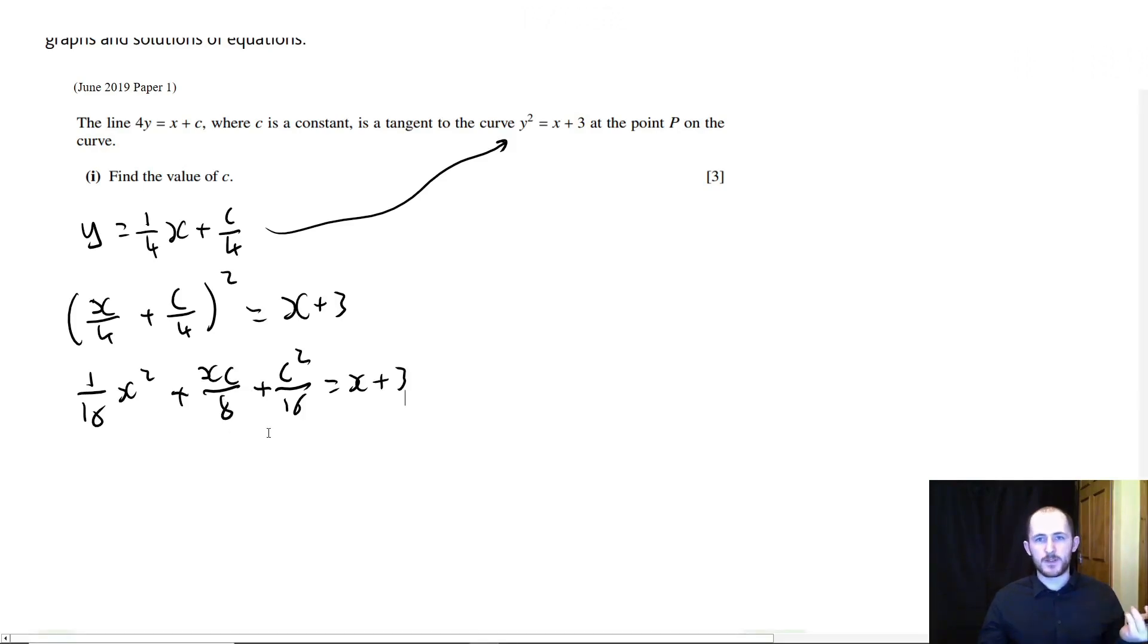Now, what we can do here is we can actually work with this. The b squared minus 4ac, we can use it with fractions, it's no harm. But if you'd like, you can times through by 16. And that will allow you to, it will look nicer. That's literally it. So I'm going to do it just because I assume that a few of you might want that. So we can have x squared plus 2cx plus c squared equals 16x plus 48.